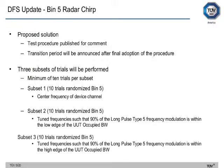This proposed solution is published for comment, with a transition period to be announced after final adoption. They have outlined three subsets of trials with a minimum of 10 trials per subset. Subset 1 uses 10 randomized BIN 5 trials where the center frequency of the device channel is used. Subset 2 tunes frequencies so that 90% of the long pulse type 5 frequency modulation falls within the low edge of the equipment's occupied bandwidth. Subset 3 tunes frequencies so that 90% falls within the high edge of the equipment's occupied bandwidth.